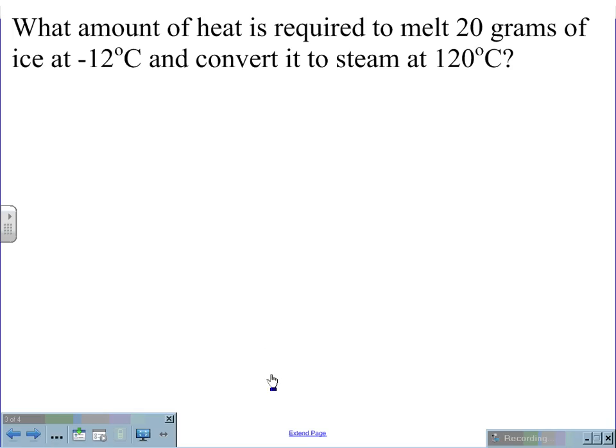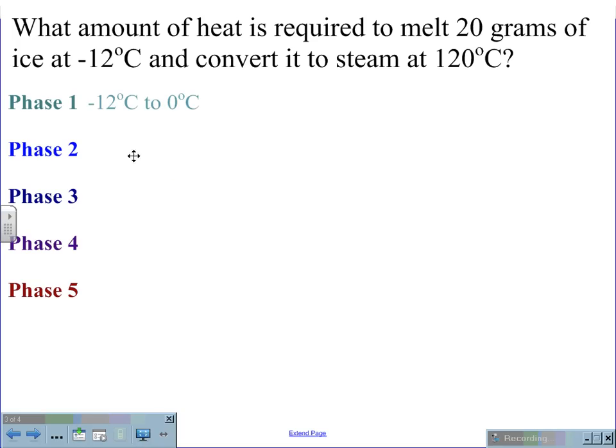To calculate the amount of heat required to melt 20 grams of ice at negative 12 degrees Celsius as it is converted to steam at 120 degrees Celsius, we need to understand that water will undergo five separate steps: from negative 12 up to 0, at 0, from 0 to 100, at 100, and from 100 to 120.